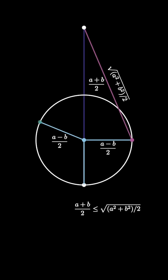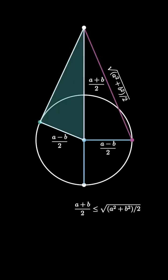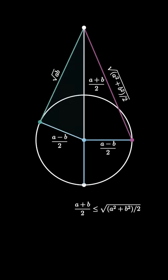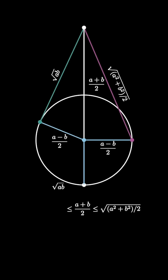Now draw this radius so that connecting these two points creates a tangent to the circle. Again by the Pythagorean theorem, the side length here is sqrt(ab), so sqrt(ab) is less than or equal to (a+b)/2.